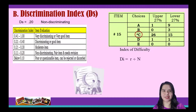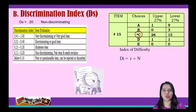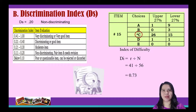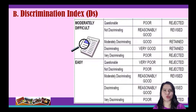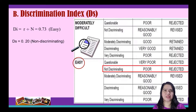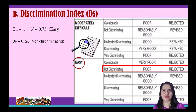For the index of difficulty, here's the formula: DI equals R divided by N. As mentioned earlier, R is the total number of correct responses. So we add the correct responses from the upper group and lower group — that is 26 plus 15 equals 41. Then we divide it by 56, which is the total takers. The answer is 0.73. Presenting the table from Regani 2008: if the index of difficulty is easy and the DS is non-discriminating, then the item is considered poor and must be rejected. The decision is to reject the item with the justification that it is unreasonable to retain an easy item that cannot differentiate high from low performing students.